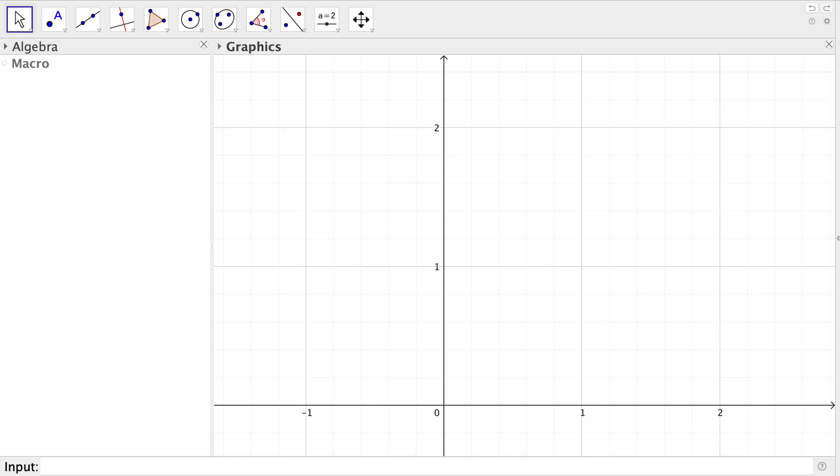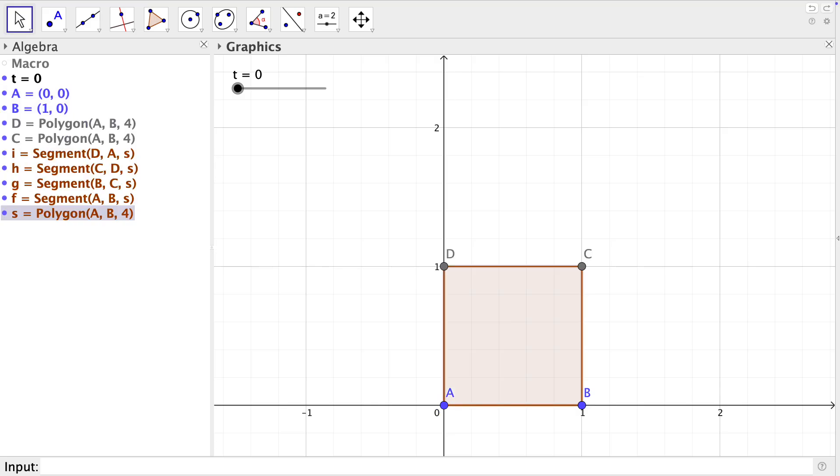To start, let's make our initial geometric shape. First, define a slider T from 0 to 1. This is going to allow me to control the motion of my Pythagoras fractal tree. Let's define now point A as 0,0 and point B as 1,0. Now we use the command polygon with arguments A, B and 4 to create a square.